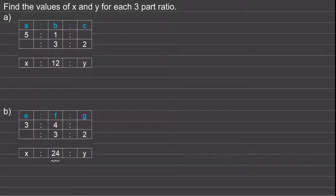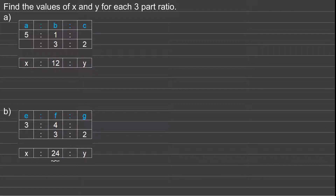In this lesson I want to show you how to solve problems involving three-part ratios, and to do this we're going to split the ratio up into two two-part ratios. So for question a we have a three-part ratio a to b to c and we've been told that the ratio a to b is five to one and the ratio b to c is three to two and we've been asked to work out the value of a and c when b is equal to 12. To do this I'm going to write this as two two-part ratios.